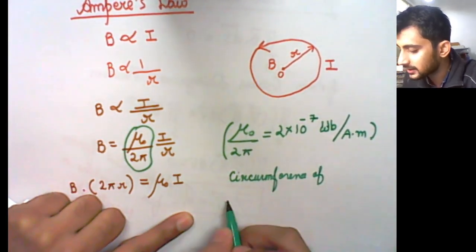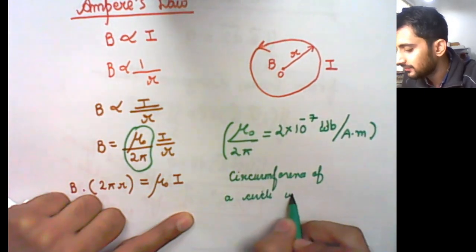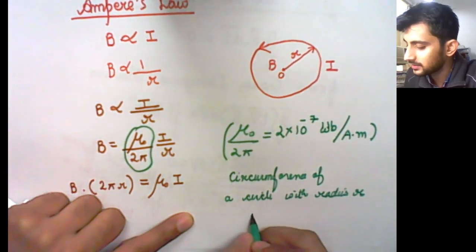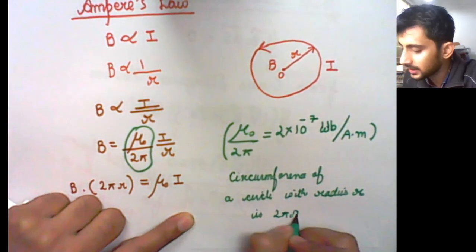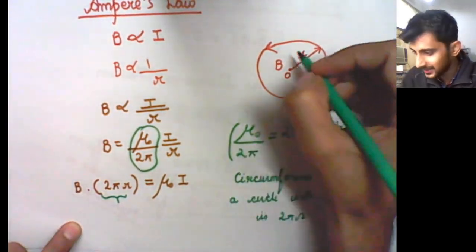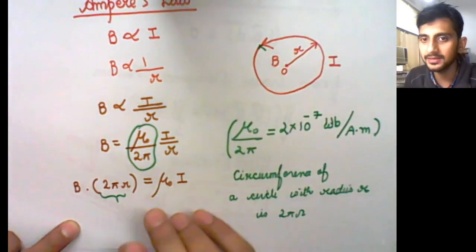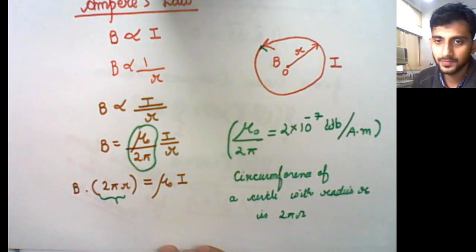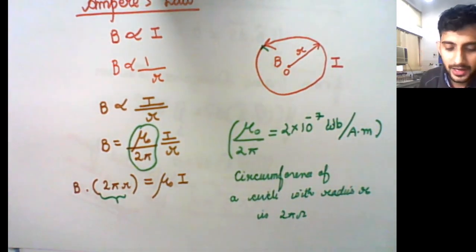The circumference of a circle with radius r is 2πr. So the total length of this loop — starting here and going all the way around — is 2πr. So B times the total length equals mu0 times I.